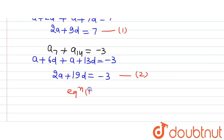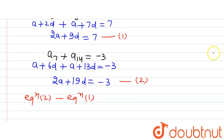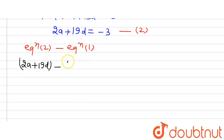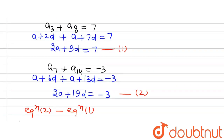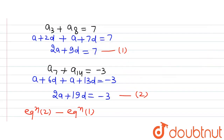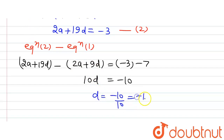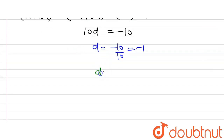Now we subtract equation 1 from equation 2. So (2A + 19D) minus (2A + 9D) = minus 3 minus 7. The 2A terms cancel, giving 10D = minus 10, so D = minus 1.